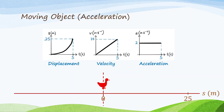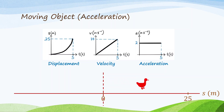Moving object with acceleration. The duck is accelerating to the right — it becomes faster and faster to the right. The duck moves from origin to 25 meters. So, the displacement graph increases from 0 to 25 meters, and the displacement graph is curving upward because the velocity increases. The gradient of the displacement graph is the velocity — velocity increases, so the gradient of displacement graph also increases. Velocity increases from 0 to 10, with acceleration — becoming faster and faster. There is an acceleration.